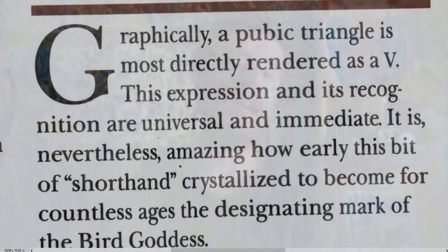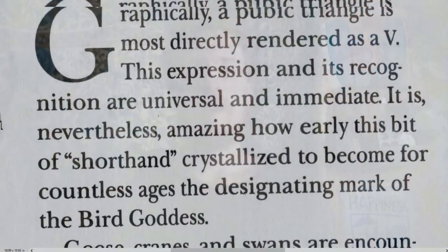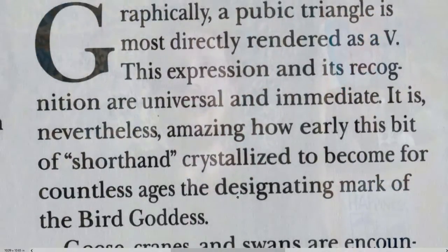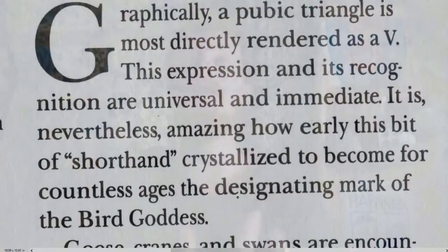Graphically, a pubic triangle is most directly rendered as a V. This expression and its recognition are universal and immediate — the V is iconic for the vulva, the pubic triangle. It is nevertheless amazing how early this shorthand crystallized to become for countless ages the designating mark of the bird goddess. We lost that symbol with the dawn of more articulate written languages like Egyptian hieroglyphs or Sumerian.